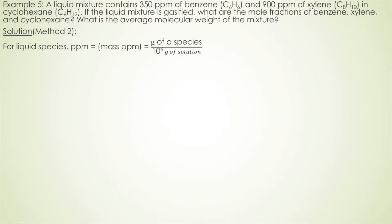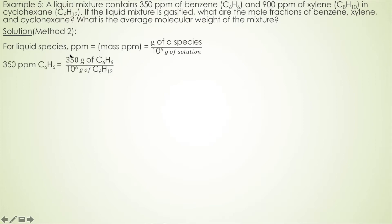Now let's look at the second method. For liquid species, part per million is mass ppm, and by definition it means mass of the species per million grams of solution — units can be grams or kilograms as long as they are consistent. So for 350 ppm of benzene, that means 350 g of benzene per million grams of cyclohexane solution.